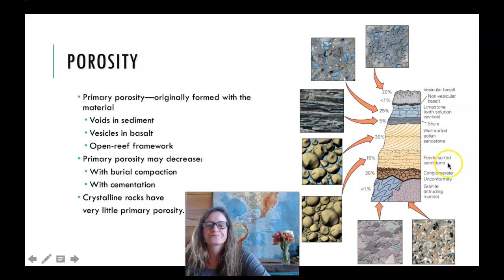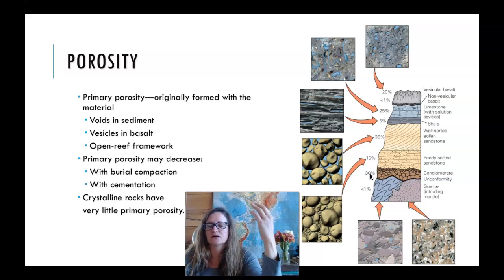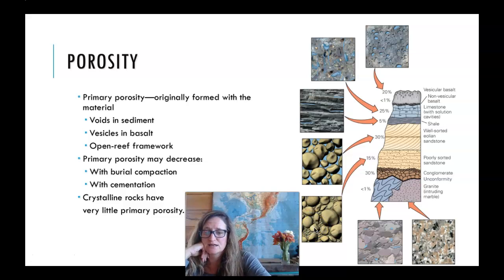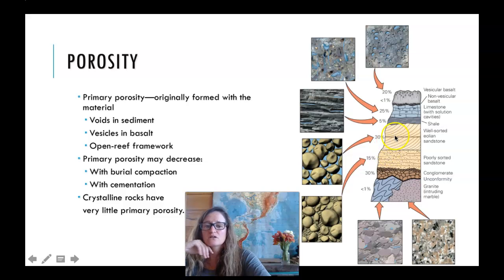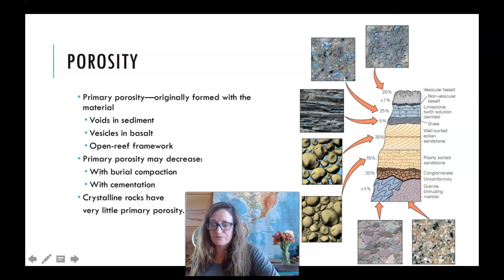Moving up the stratigraphic column, porosities change for different sedimentary units. A conglomerate has 30% void space — that's a lot of void space, meaning 30% of that rock is air or space between the big pebbles. Above that, a poorly sorted sandstone has 15%, with two or three sand sizes giving 15% pore space. A well-sorted aeolian sand may have just one grain size, so all those grains touch each other but still leave a fair amount of space between them.